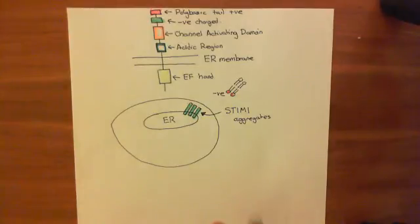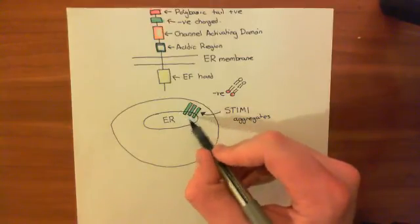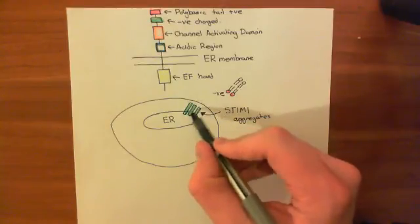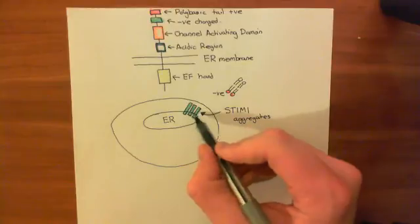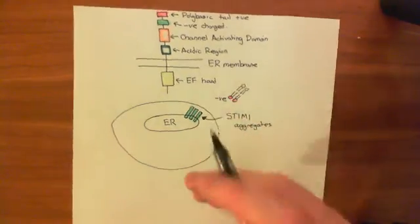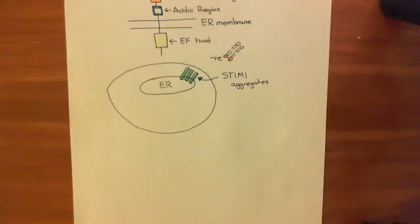These STIM1 aggregates form in the ER membrane and also interact with and bind to the plasma membrane of the cell. The positive charge on the polybasic tail interacts favorably with the negative charge on the phosphate groups of the phospholipid heads. The STIM1 aggregate then needs to stimulate a channel in the plasma membrane that is permeable to calcium.